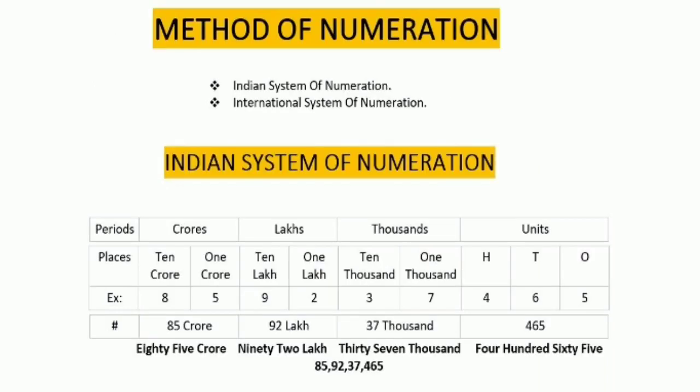Now come to the method of numeration. It is a process of reading and writing of numbers. It is of two types: first, the Indian system of numeration, and second, the international system of numeration.